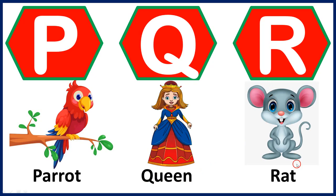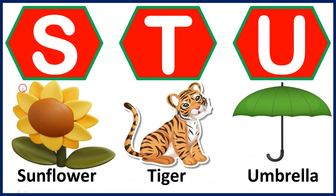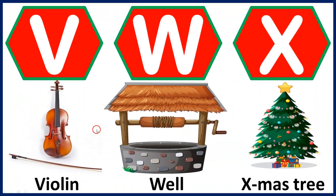R, R for rat. S, S for sunflower. T, T for tiger. U, U for umbrella. V, V for violin.